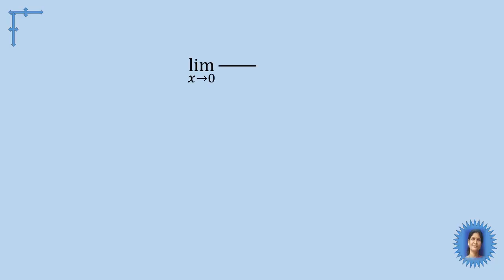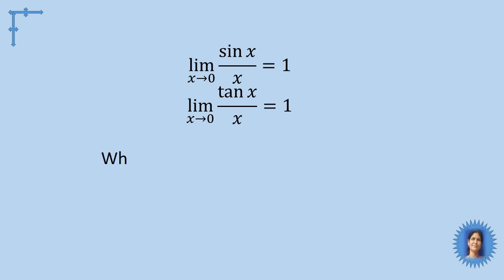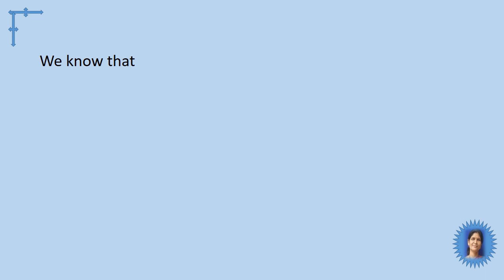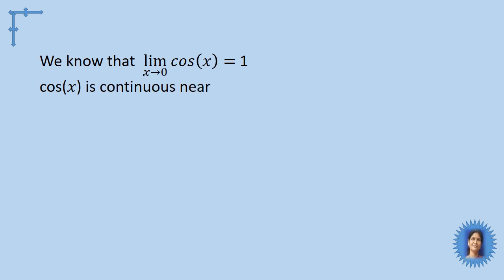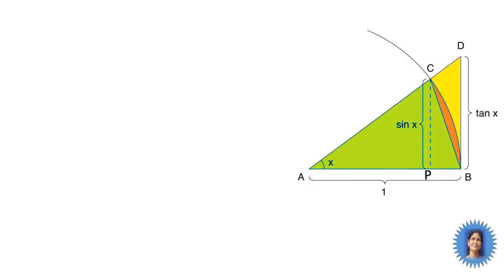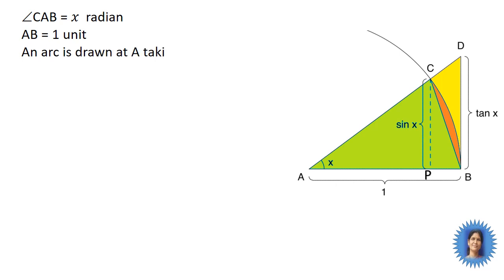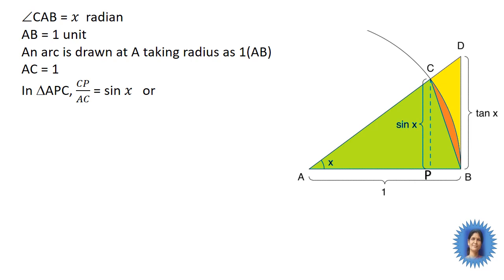Now let us learn another interesting application of the sandwich theorem: limit as x→0 of sin(x)/x equals 1, and limit as x→0 of tan(x)/x is also equal to 1, when x is measured in radians. We know that limit as x→0 of cos(x) equals 1, and cos(x) is continuous near 0 with cos(0) = 1. We will use this to prove that limit as x→0 of sin(x)/x = 1. Please observe the figure: angle CAB is taken as x radians, AB is taken as 1 unit, and an arc is drawn at A with radius equal to AB, so the radius equals 1.